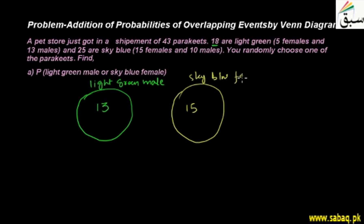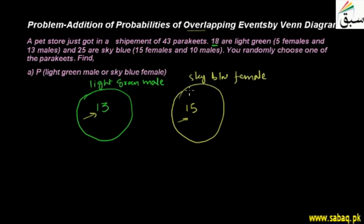There is no overlap — this is a disjoint event. If a parakeet is light green, it will not be sky blue. If it is male, it will not be female. So there is no overlap in any outcome. The two events are disjoint events.